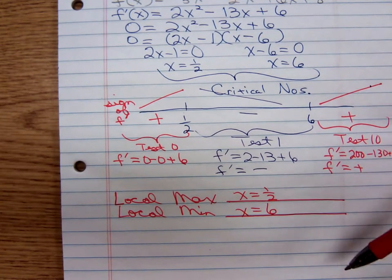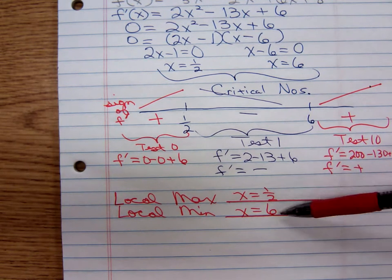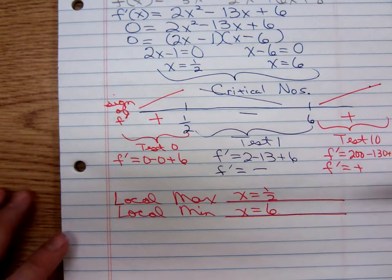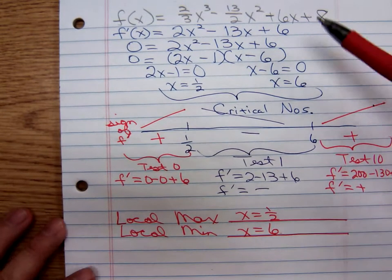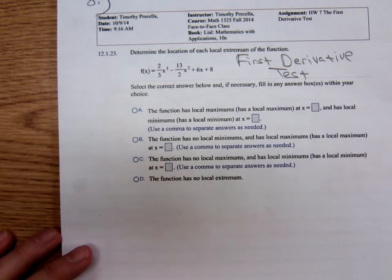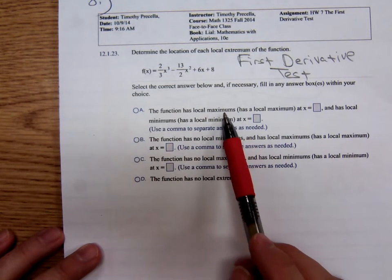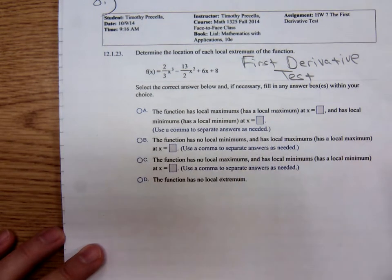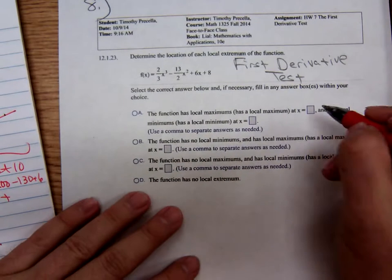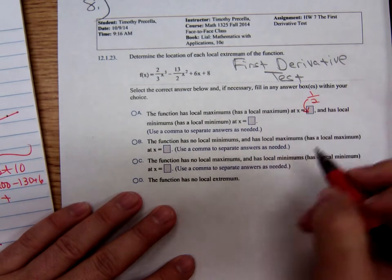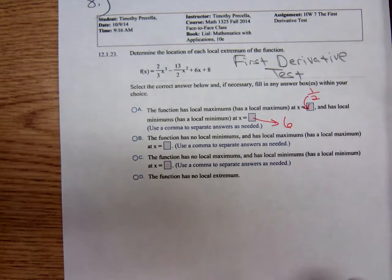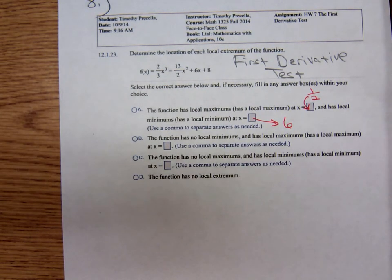Now, there's a variety of ways that they could have you express your answer. They may just say give the x value only, or they may want the x value and the y value. If they want the y value when x equals one-half, you're going to have to plug that into the original. Let's go back to the original problem. The function has a local maximum at x equals and the local minimum at x equals. Okay, they don't want the y value. So, a local maximum at one-half goes in that first box right there, and a local minimum at positive six for our final answer.